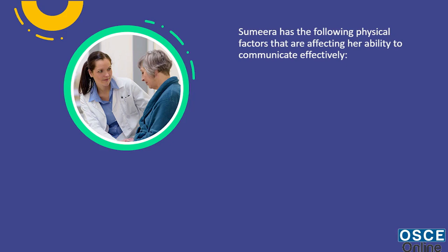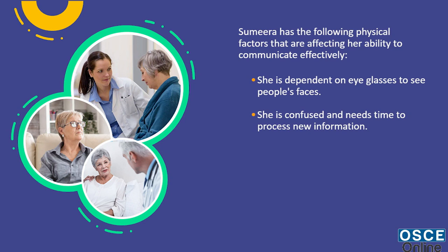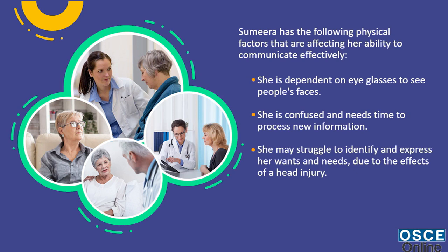Sumira has the following physical factors that are affecting her ability to communicate effectively: she is dependent on eyeglasses to see people's faces; she is confused and needs time to process new information; and she may struggle to identify and express her wants and needs due to the effects of a head injury.